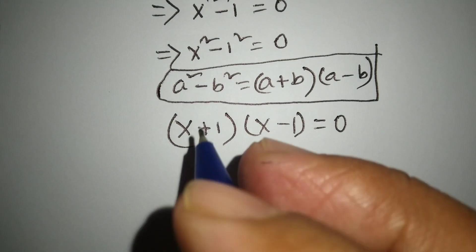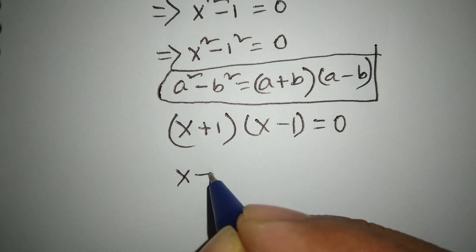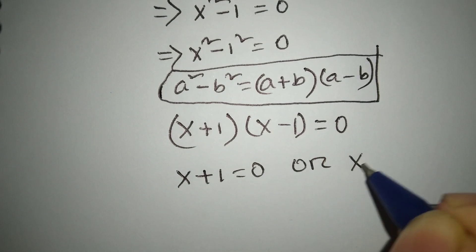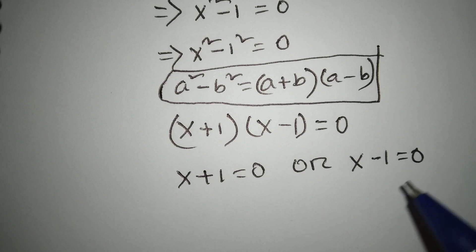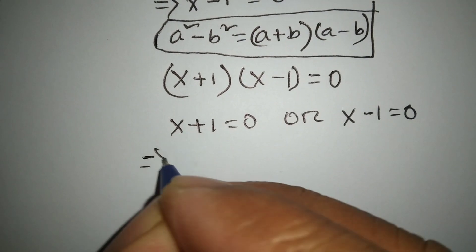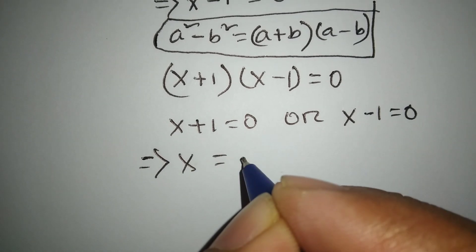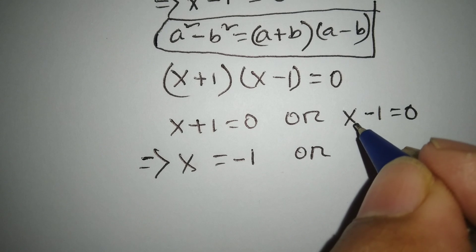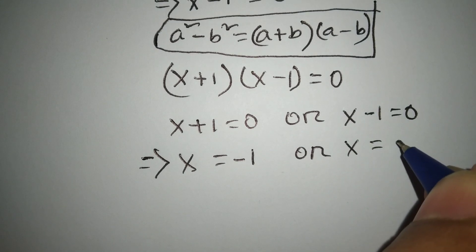Either x plus 1 equals 0 or x minus 1 equals 0. Or x equals minus 1. Therefore x equals minus 1 or x equals 1.